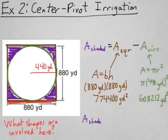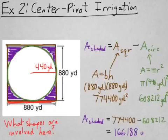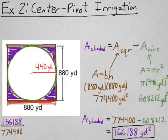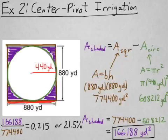So to find the shaded area then, I just need to subtract those two, which gives me an area of 166,188 square yards. Just for fun, I want to see what percent of the field that is. So if I take 166,188 over the area of the entire square, that gives me 0.215 or 21.5%. So that means 21.5% of his field is not getting watered.